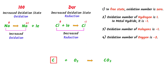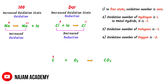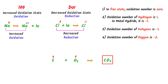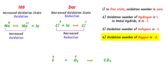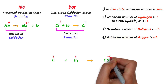Here, carbon is in the free state and oxygen gas is also in the free state, so the oxidation state of carbon is zero and the oxidation state of oxygen is also zero. Carbon and oxygen combine to form carbon dioxide gas — this is the combined state. We know that in the combined state, the oxidation state of oxygen is negative two. There are two atoms of oxygen, so the total oxidation state is negative four.